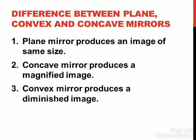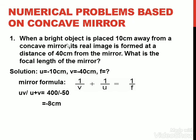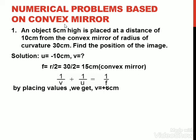Convex mirrors are used as shop security mirrors and rear-view mirrors in vehicles. The difference between plane, convex and concave mirrors: plane mirror produces an image of the same size; concave mirror produces a magnified image; convex mirror produces a small, diminished image. For numerical problems based on concave mirrors, note that object distance is negative since the object is on the left side, apply sign convention, then use the mirror formula to find the required quantity.